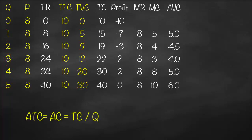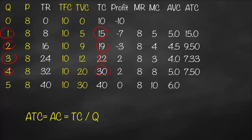Average total cost is total cost divided by quantity: Q1: 15/1=15; Q2: 19/2=9.5; Q3: 22/3=7.33; Q4: 30/4=7.5; Q5: 40/5=8.